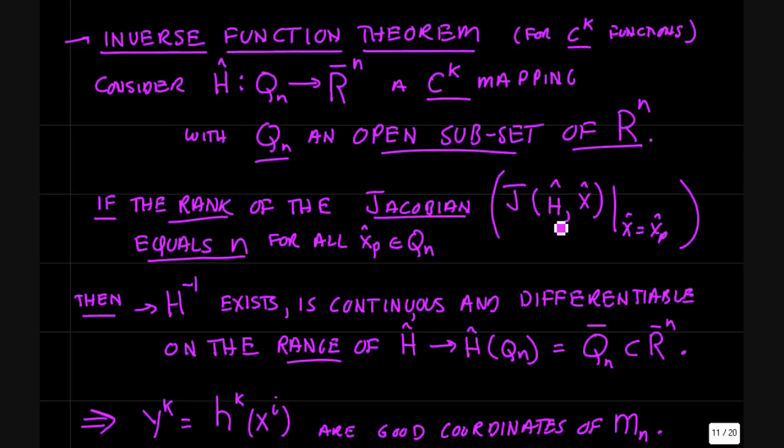This statement about the rank of the Jacobian - the rank of the matrix means if the columns of the matrix consist of linearly independent column vectors, the rank of the square matrix is equal to n, the number of columns. And this is equivalent to saying that the determinant of J is non-zero in this region.